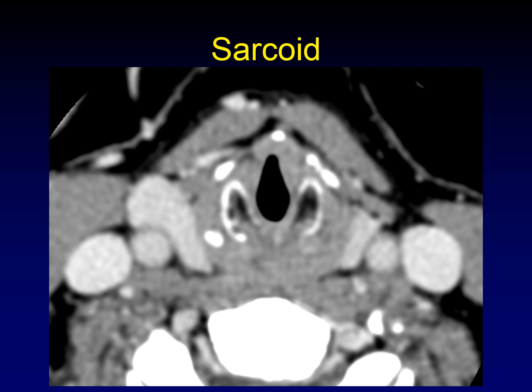This mass is a little more subtle — there is an area of abnormal enhancement and a mass sitting right along the anterior commissure, blunting the normally sharp anterior commissure. This one happens to be sarcoid. There's nothing about this, maybe except the patient's history, that would clue you into this being sarcoid rather than squamous cell carcinoma.